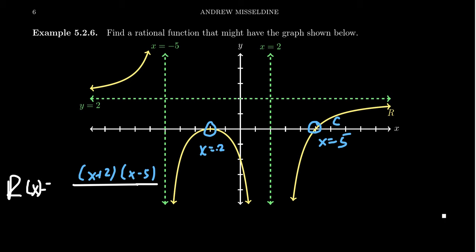Notice what happens at the x-intercepts. At x = 5, we crossed infinity — we went from negative to positive. But at x = −2, we actually went from negative to negative, so this was only a touch. That tells me we're going to have an even multiplicity at negative two and an odd multiplicity at five. To keep things simple, I'll take (x + 2)² and (x − 5)¹.